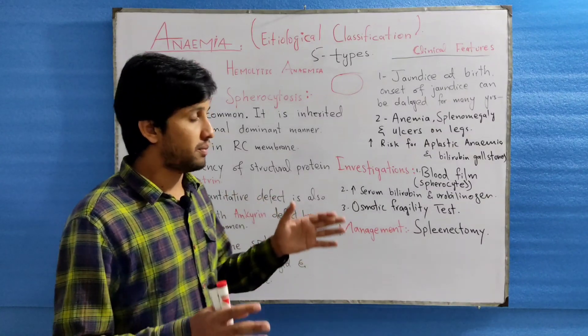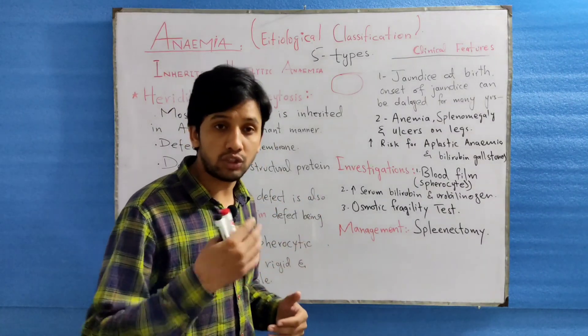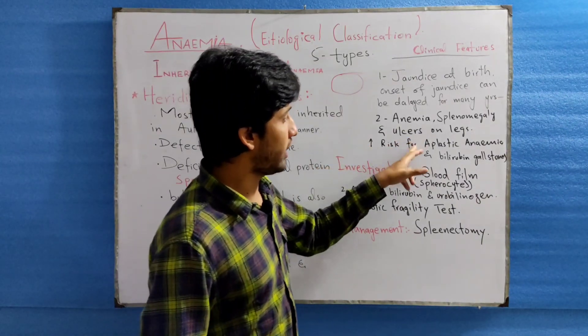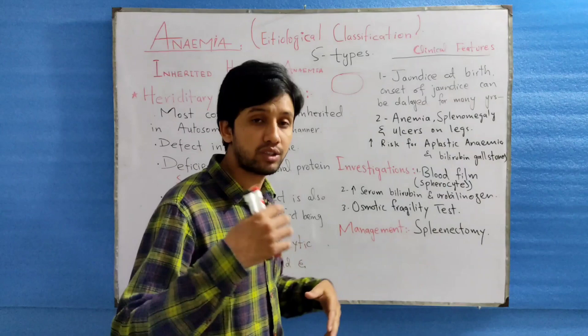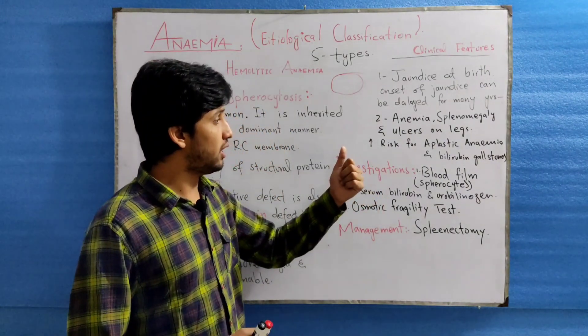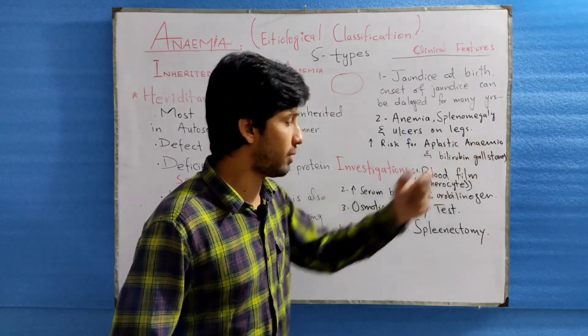Second one here is anemia. The patient will be anemic with splenomegaly, and ulcers can also be seen on the legs. There is also an increased risk for aplastic anemia from infections like parvovirus, and there will be increased chances of bilirubin gallstone formation.